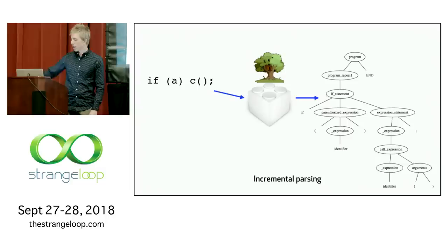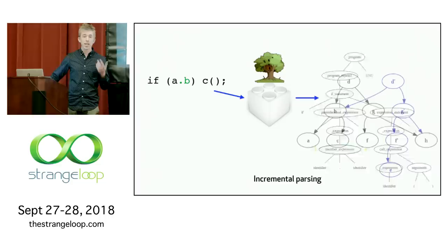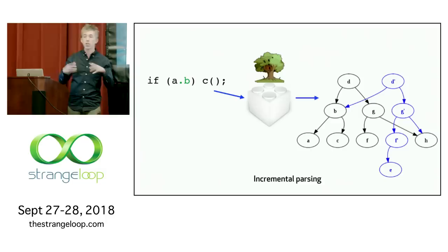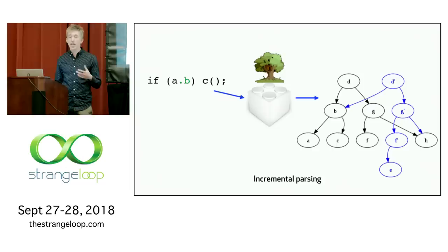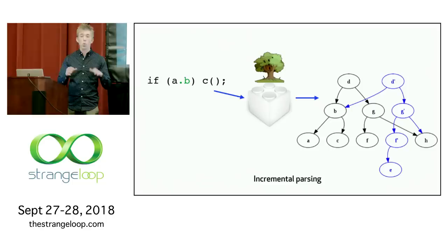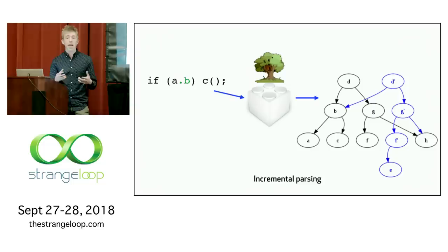Creating that new tree is super fast and uses very little memory because the new tree shares parts of the old tree that haven't changed. This feature makes it possible to use TreeSitter to parse source code in a text editor like Atom on every keystroke while the user is typing, and to use the syntax trees on multiple threads at the same time without worrying about race conditions.